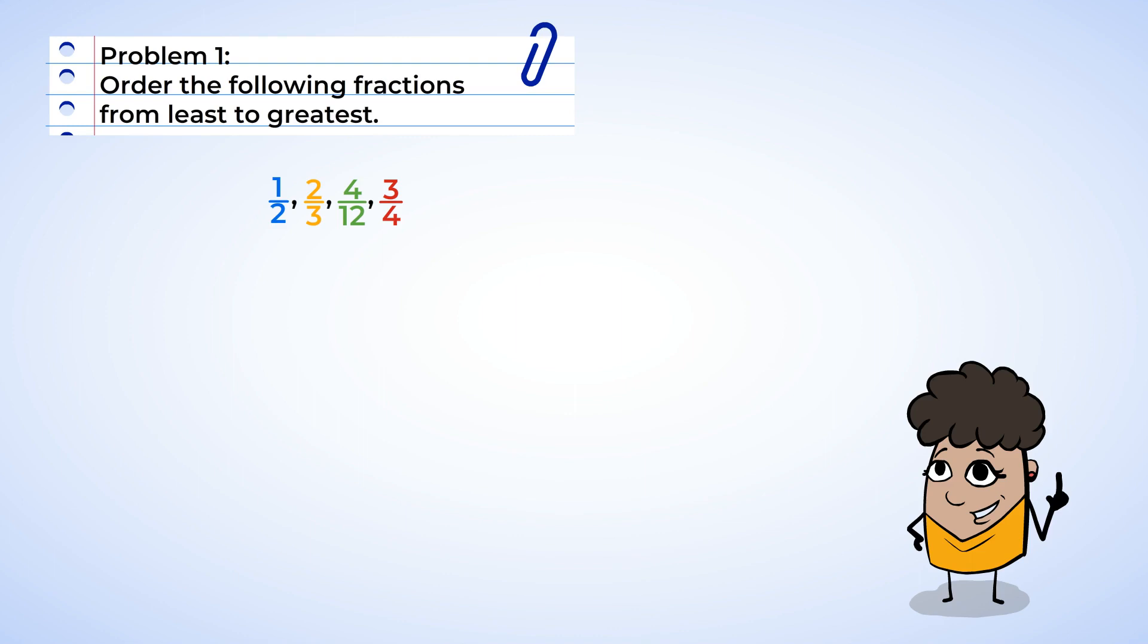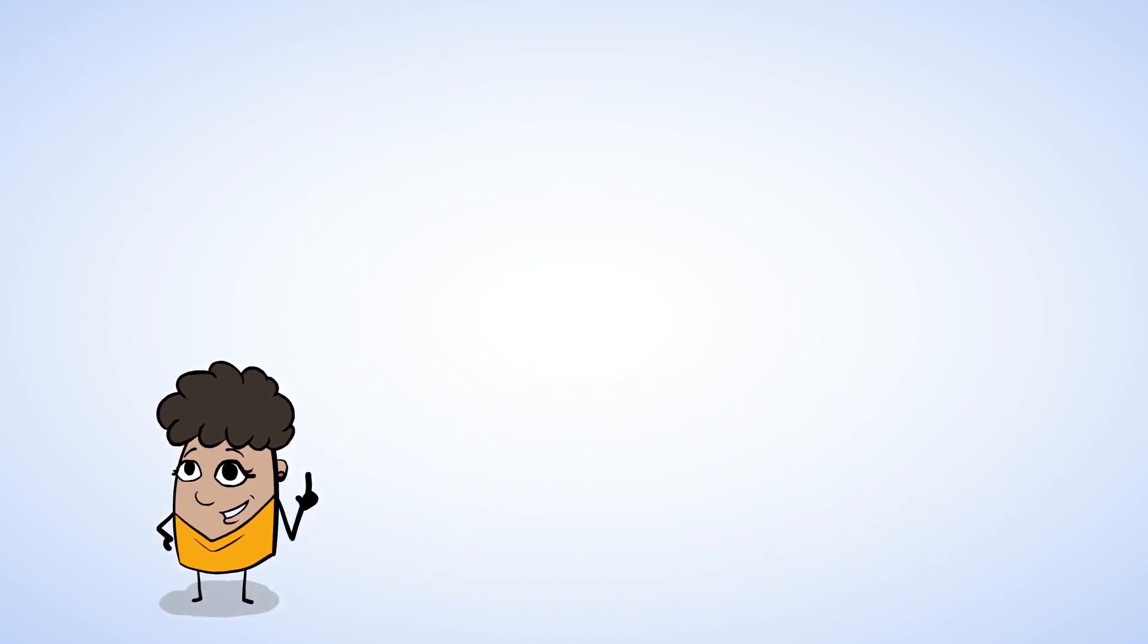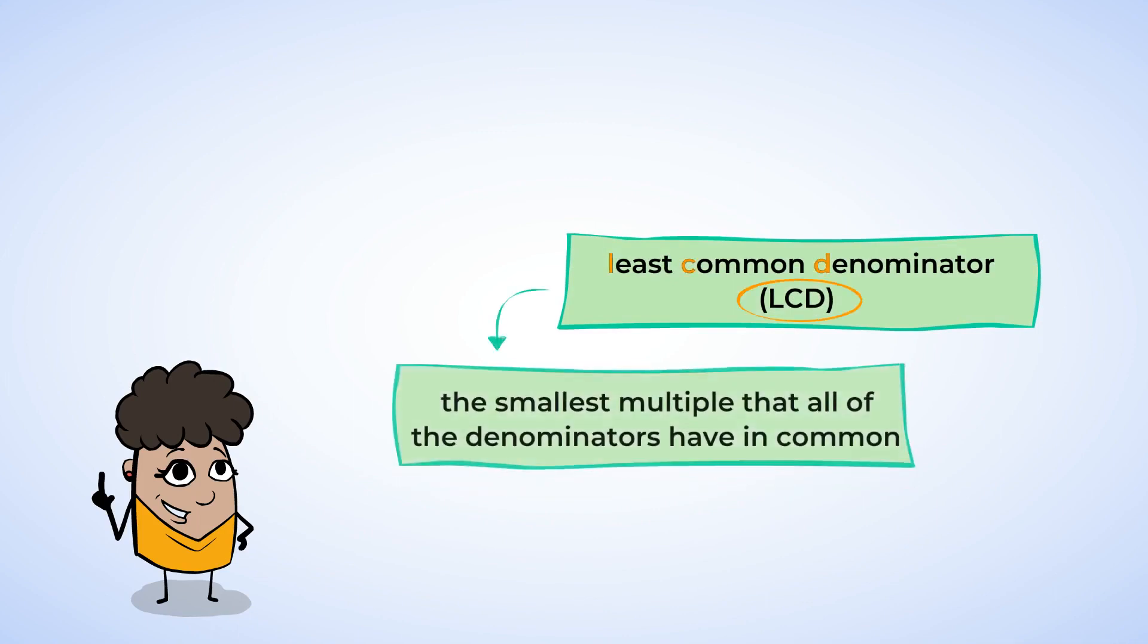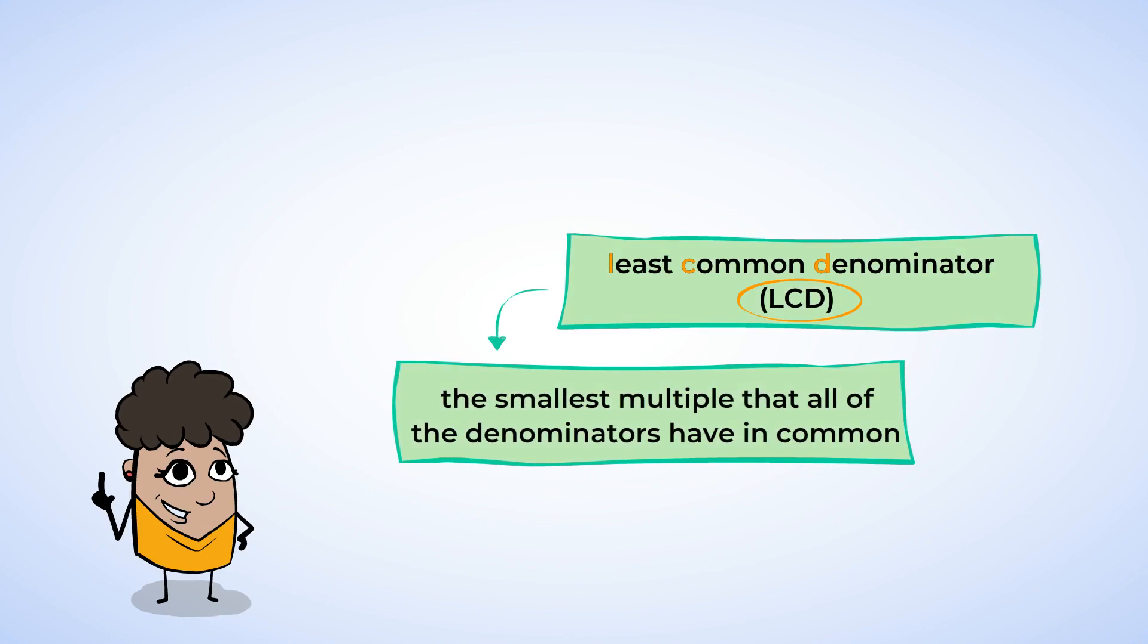Twelve. If we use the least common denominator, we can avoid large numbers and more unnecessary work for ourselves. Now the least common denominator, or LCD for short, is the smallest multiple that all of the denominators have in common.